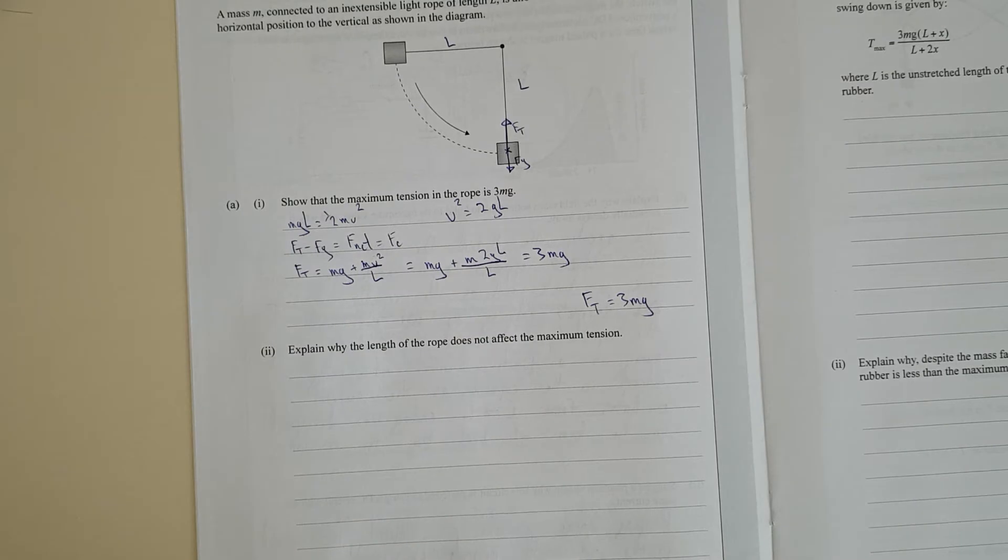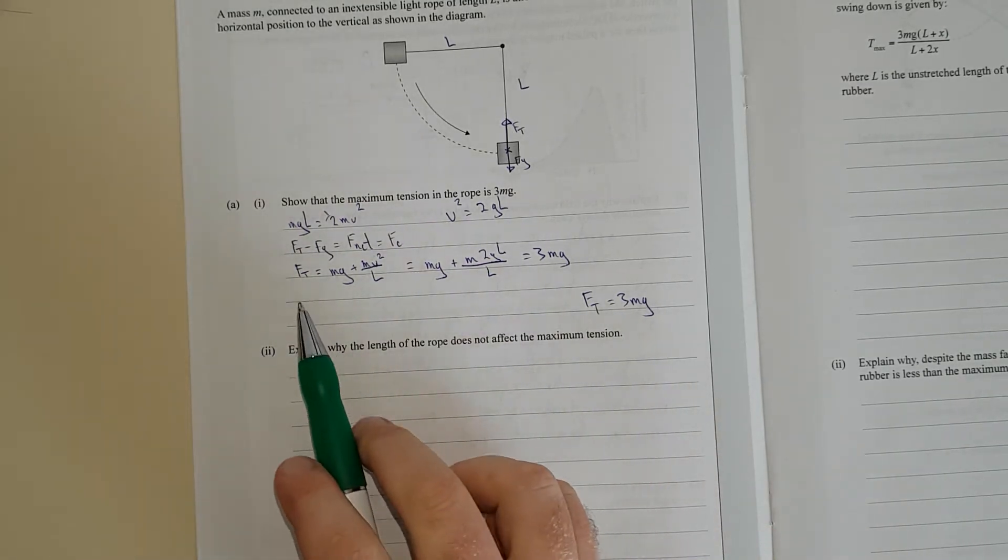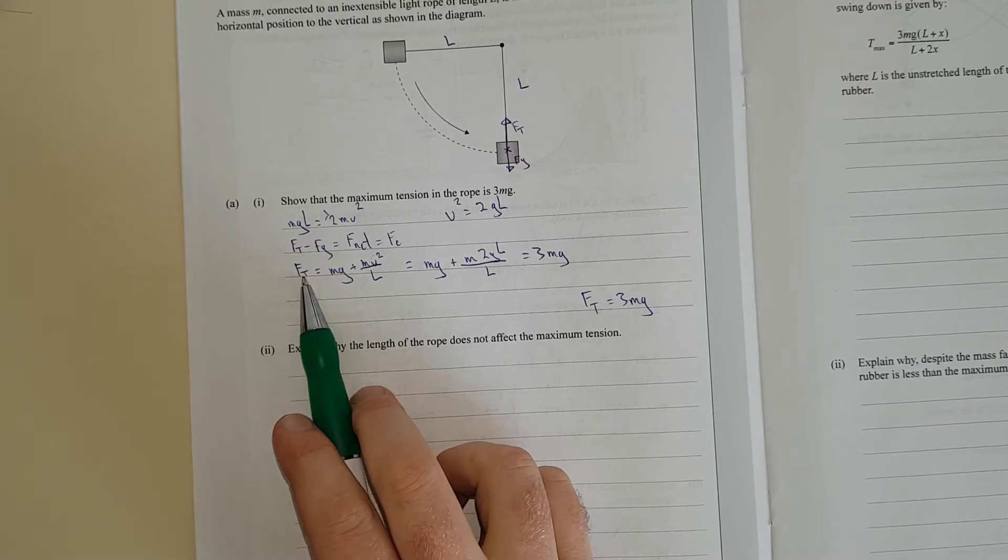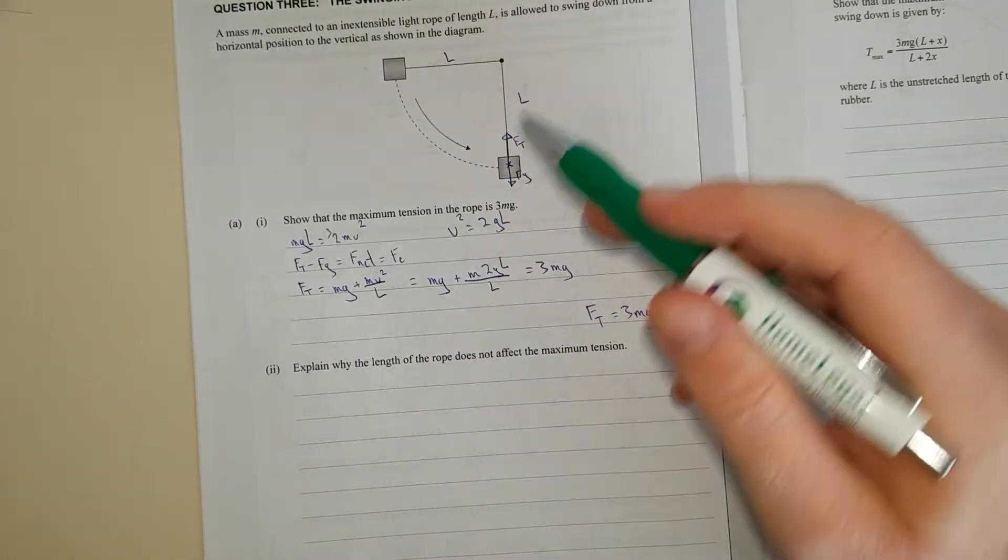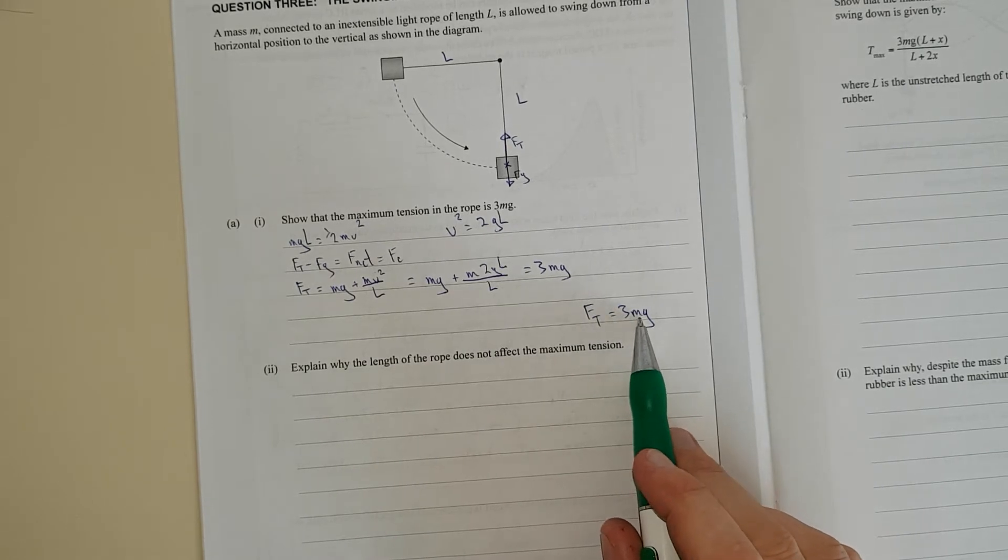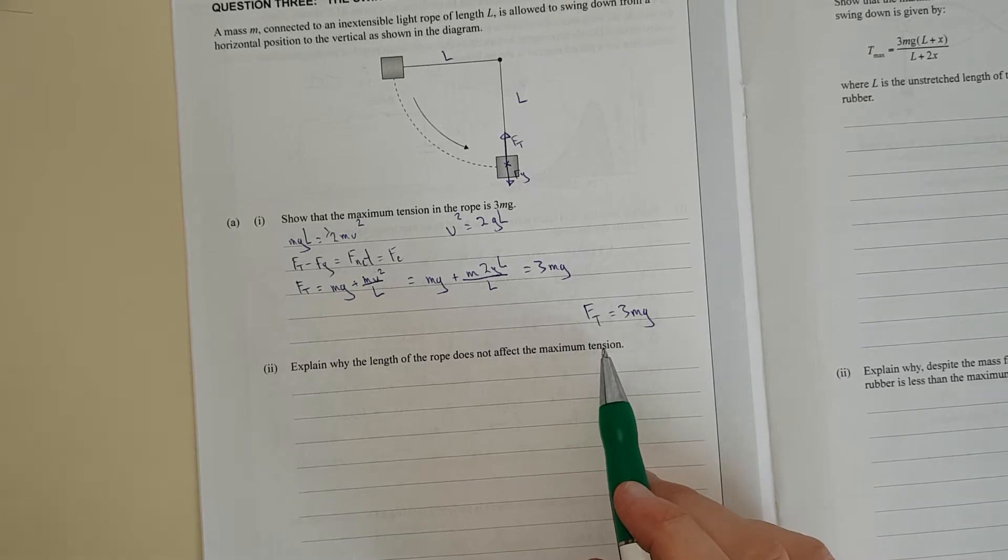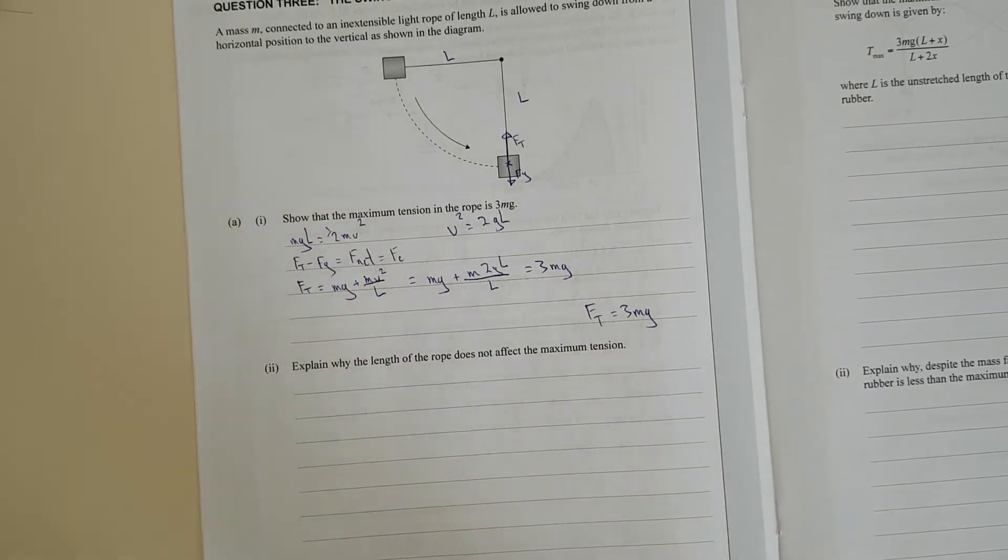Right, next question. Explain why the length of the rope does not affect the maximum tension. Well we can see here in the formula, the maximum tension which is going to occur at the bottom is equal to 3 times mass times gravity, and there's nothing to do with the length of the rope whatsoever. I'll pause it and write a comprehensive explanation.